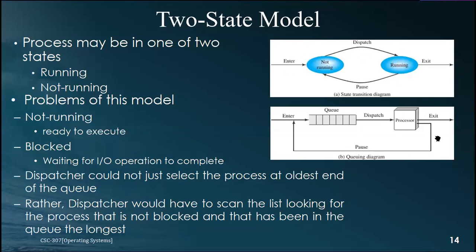The two-state model was not sufficient — it had errors and limitations. To solve this, we introduced the five-state model. In the two-state model, a process was either running or not running. The five-state model adds more granularity to better arrange processes and their different states.